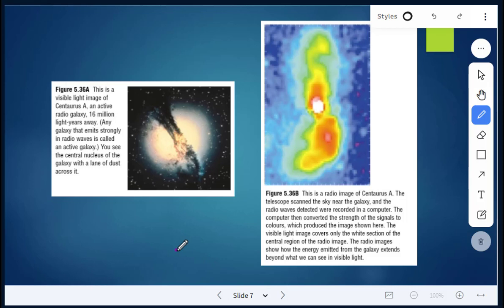So I believe I do have an image here. This here is an image, this is a visible light image of Centaurus A, an active radio galaxy. It's 16 million light years away. So you can see like a central nucleus of the galaxy, then you see like a lane of dust across it. This is a radio image of Centaurus A. You can kind of see here similarities and differences between the visible light and the radio telescope.